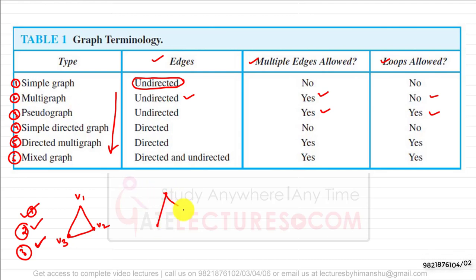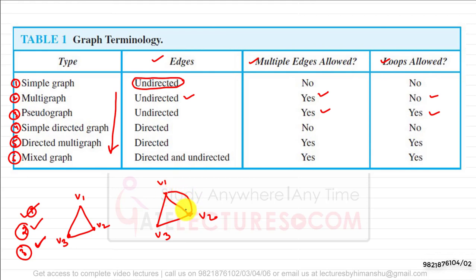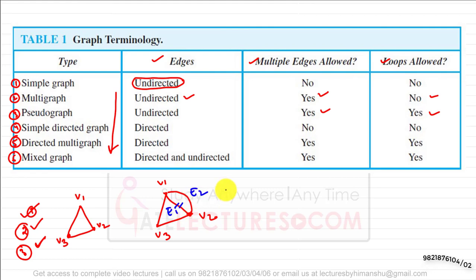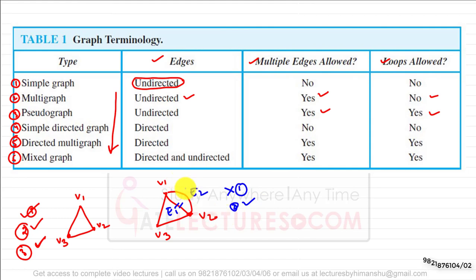For example, if we have vertices V1, V2, and V3 with two edges between V1 and V2, this is not a simple graph because there are multiple edges between the same pair of vertices. It is a multi graph because multiple edges are present, and it is also a pseudo graph.